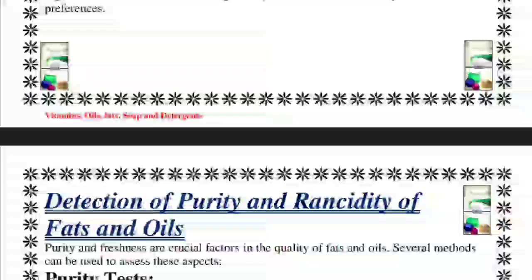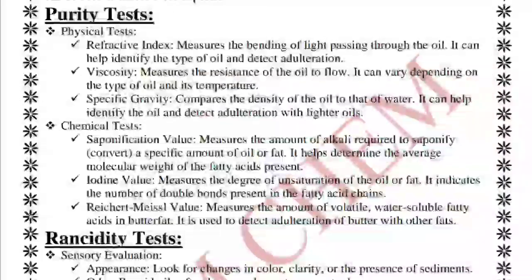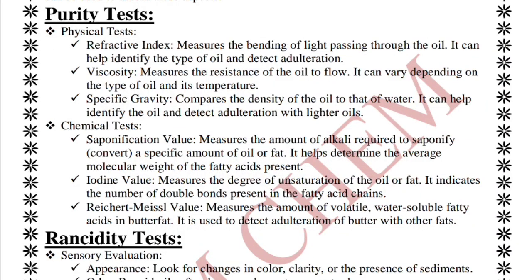To detect purity and rancidity of fats and oils, pureness and freshness are two crucial factors. Purity tests include physical tests such as refractive index — measuring the bending of light through oil to detect adulteration — viscosity, which measures resistance to flow, and specific gravity, which determines oil density to detect adulteration with lighter oils.